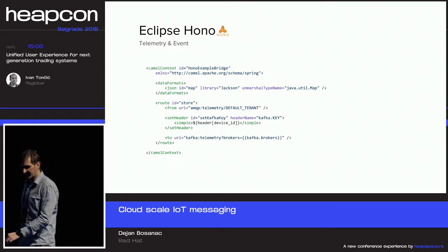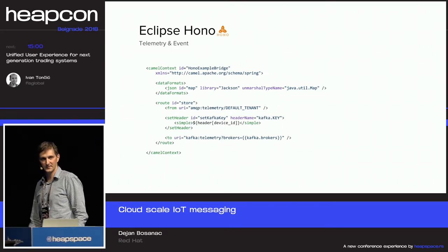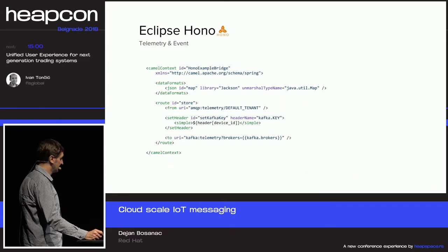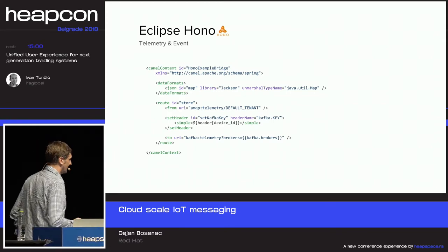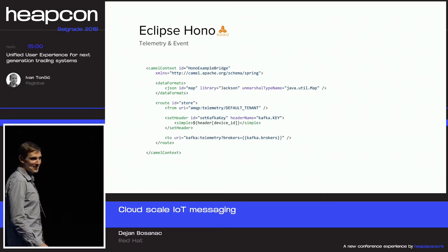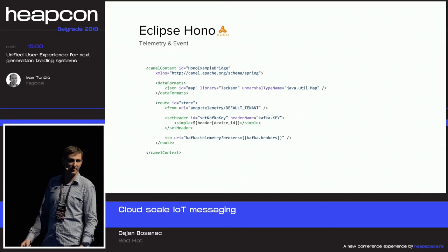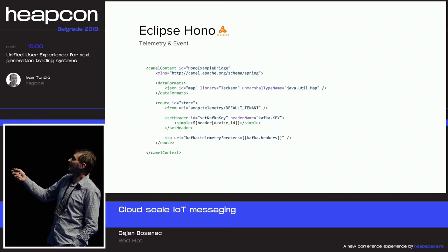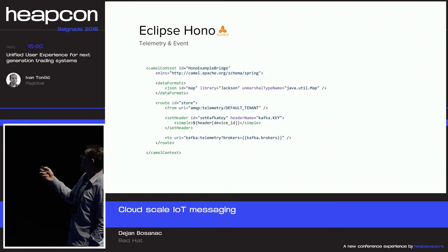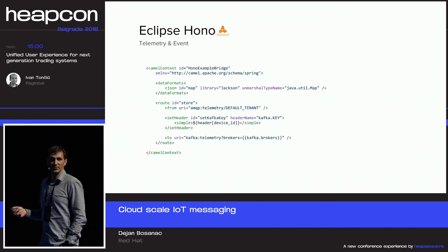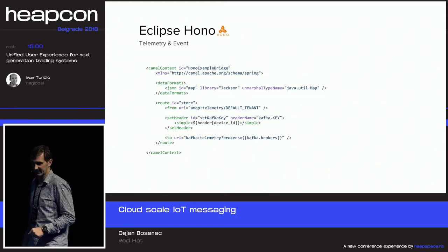Consuming messages is even simpler, because all consumers connect to the AMQP messaging infrastructure, and that infrastructure is generally the same as any other messaging application you'd connect to. This example from a workshop we're giving next week shows that you can use a framework like Apache Camel to consume telemetry data from HONO without any problems. In this particular case, we connect to the AMQP telemetry slash default tenant address to get all messages for our default tenant, and we send them to a particular Kafka topic for further processing.